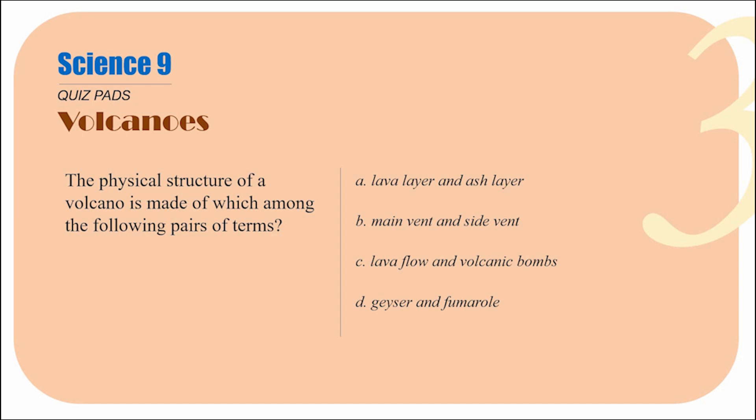Option D — geyser and fumarole. For option C, recall that when we discussed lava flow and volcanic bombs in class, they were actually part of a group of three — there was a third term alongside them. Now look back at options A, B, and D and check which one has a direct connection to the physical structure of a volcano. That's what we're looking for — a connection to physical structure.